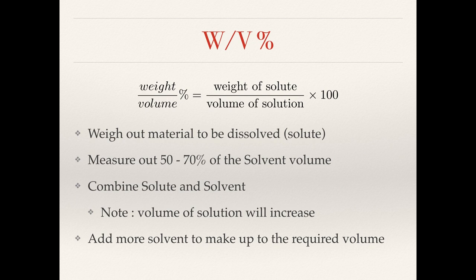The most common of all the solutions you're likely to encounter will be weight-to-volume — this is where you're weighing up some quantity of a solid and dissolving it in some amount of solution. The common catch when making up solutions of this type is that people forget the volume of a solution increases as you dissolve more solute in it. The trick is to use less solvent, dissolve the solute in the reduced amount of solvent, and then top up with solvent to the total required volume and give it a good thorough stir to make sure everything's mixed in.